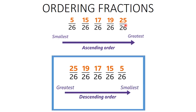Now let's look at descending order. Descending order means coming down in value. There's a memory trick — 'D for down.' So in descending order you start with the greatest, which is 25 over 26, and work all the way down to 5 over 26. Remember, this is easy when talking about same-denominator fractions — it's very easy to order and compare them.